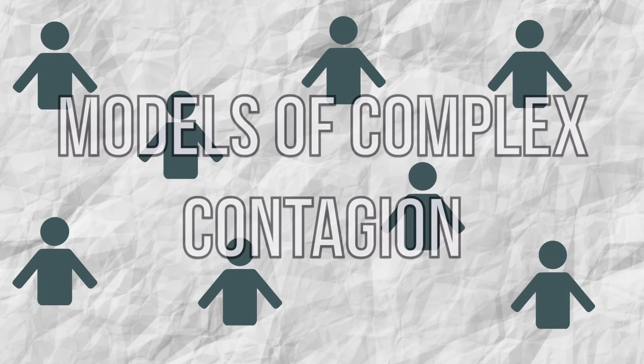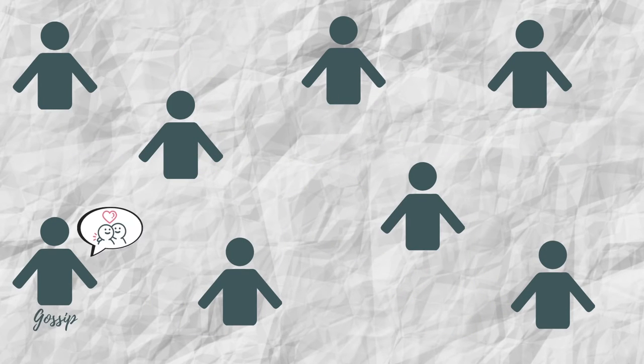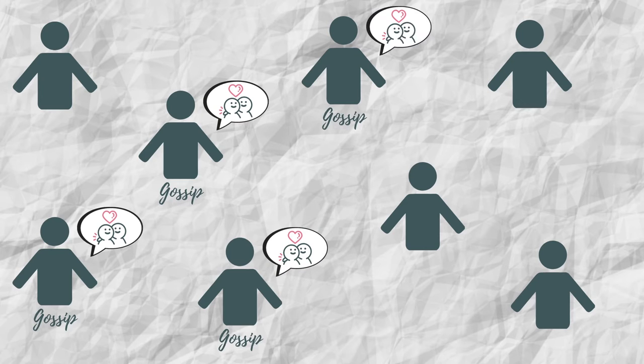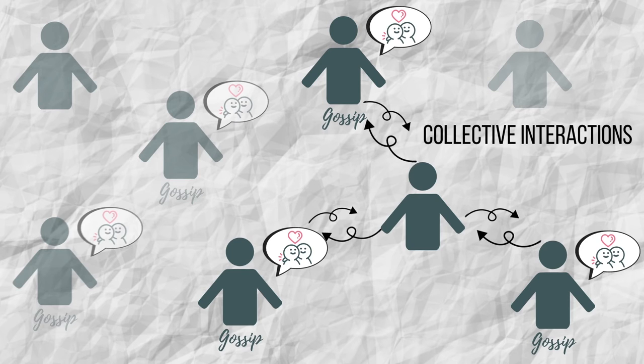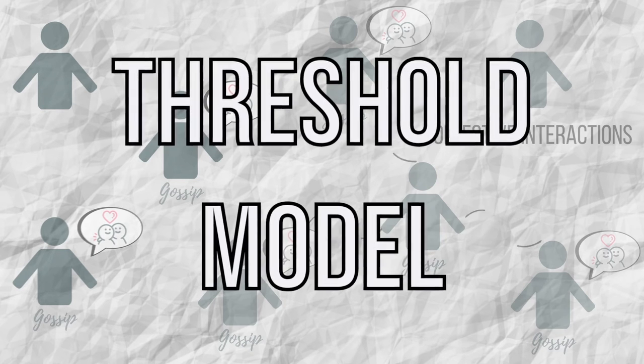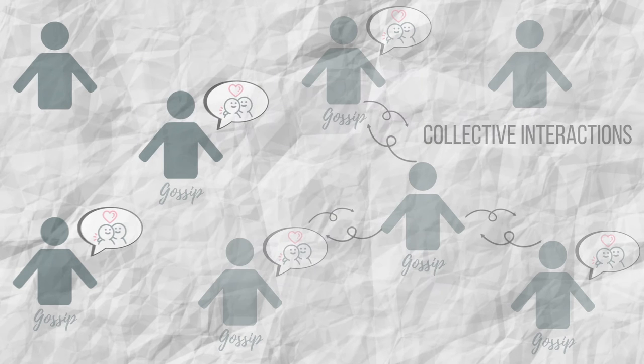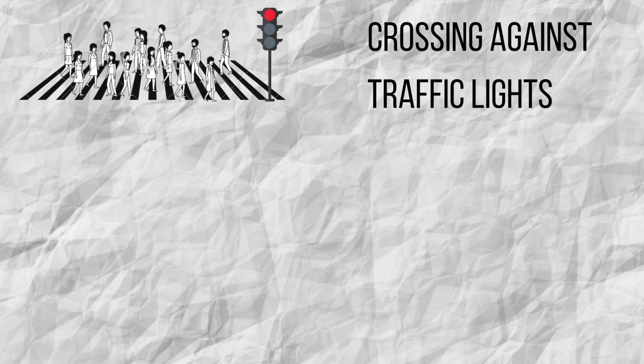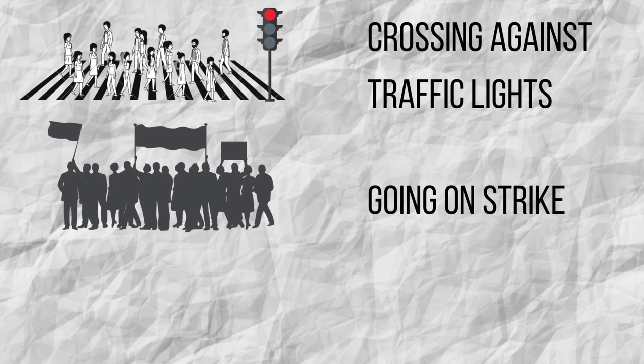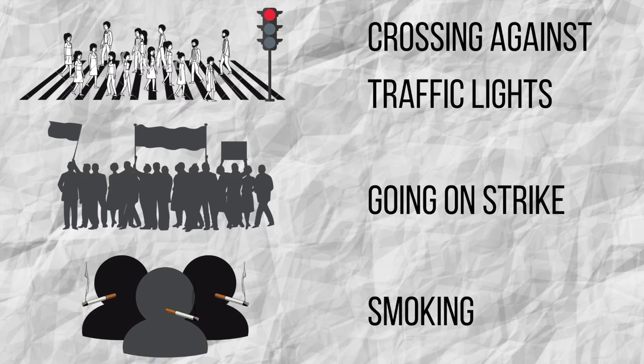Let us turn to models of complex contagion, which study the spread of rumors, fads, innovations, information. While simple contagion follows a single exposure rule, complex contagion demands multiple exposures for transmission. The model often used to describe complex contagion phenomena is the threshold model. It consists in assuming that if a certain number of one's neighbors behave in a particular way, the node will also adopt that behavior. Examples of this phenomenon are people who cross the street at red lights when they see others doing so, people who go on strike if many of their colleagues do so, or people who start smoking because of the influence of their close circle.